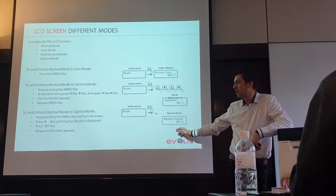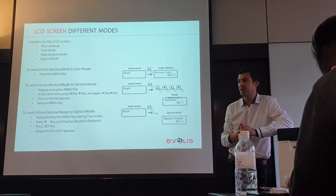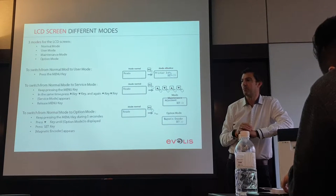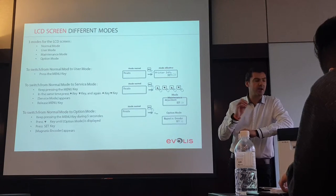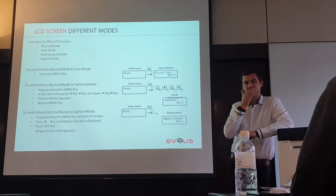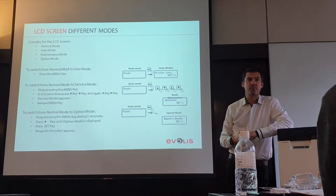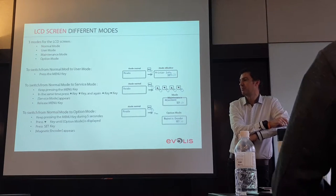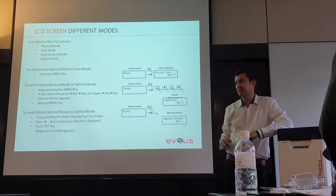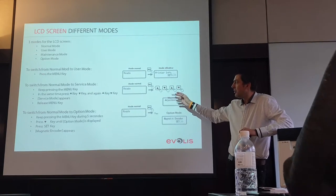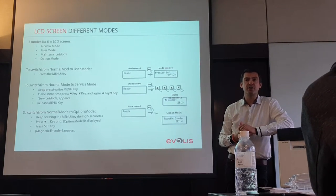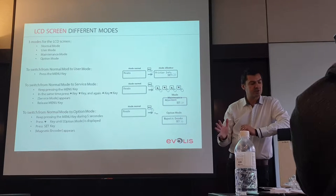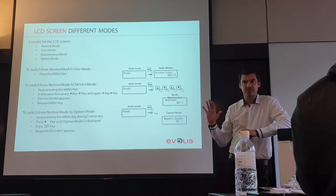In option mode, for example, you can define for magnetic encoding whether you use high or low coercivity (Hi-Co or Lo-Co). This option does not exist in the driver — it only exists in the LCD menu. Option mode will also be important for the laminator and for setting the RS-232 communication mode. User mode is also very important for cleaning — there is no cleaning button in the application or driver; cleaning can only be performed through the LCD menu.